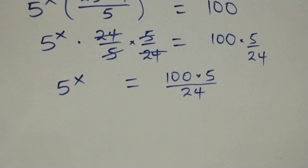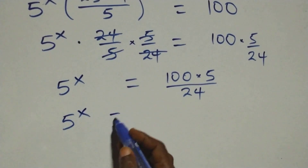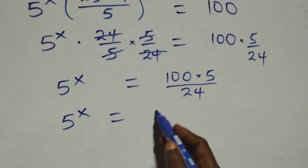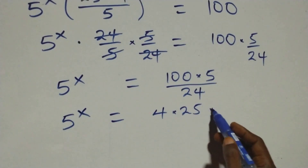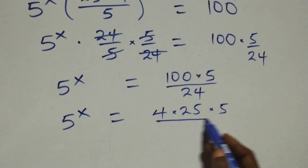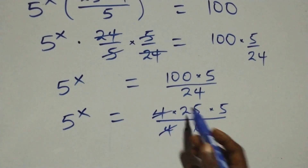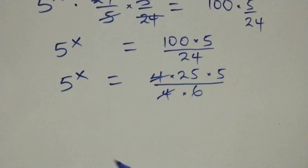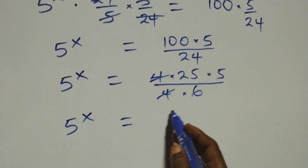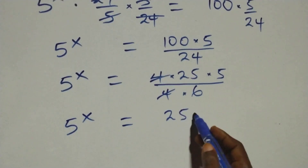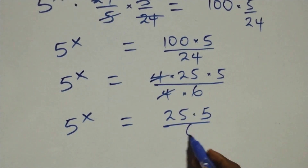The next step: this is the same as 5 raised to power x equals 4 times 25 times 5 over 4 times 6. The 4s cancel each other, and this becomes 5 raised to power x equals 25 times 5 over 6.